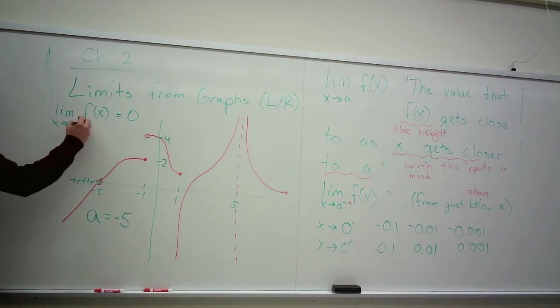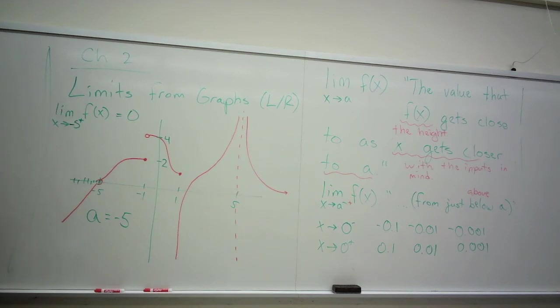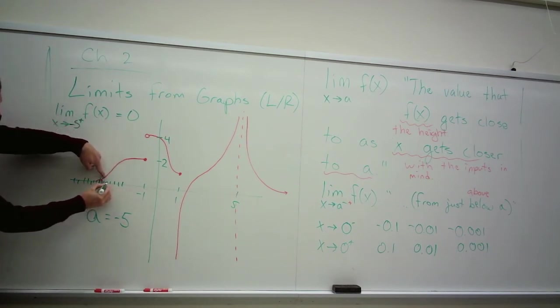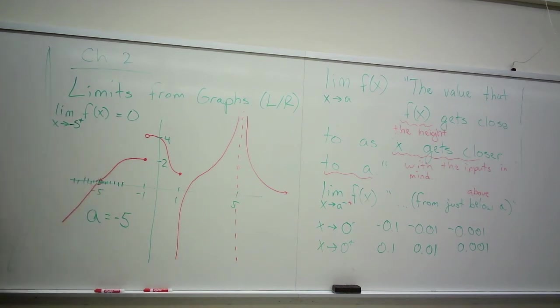If we play the same game but from the right, we pick numbers that are here, a little bit over negative 5, a little bit over, and we just keep getting closer and closer and closer. And you can see that the heights of the function get closer and closer and closer to zero as well.